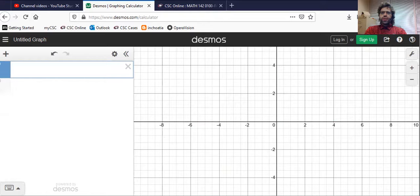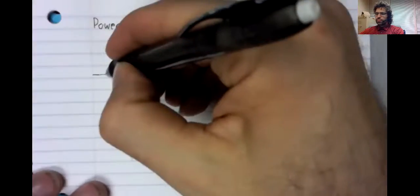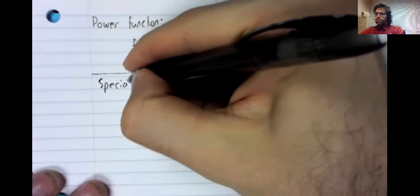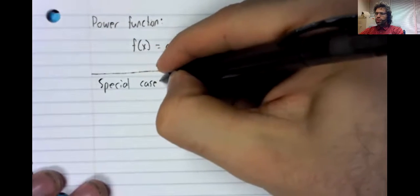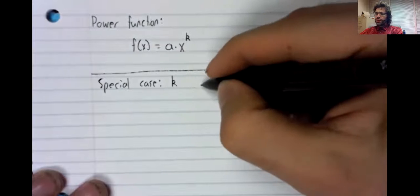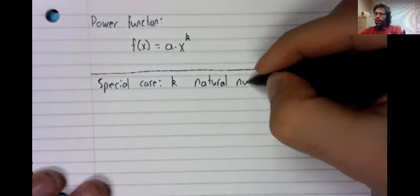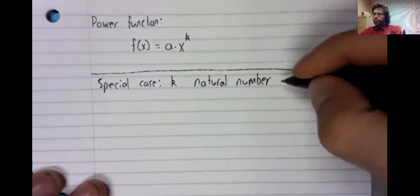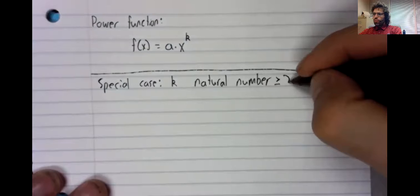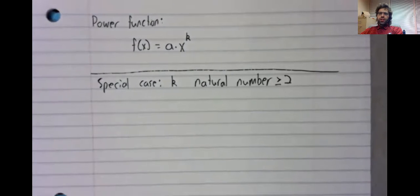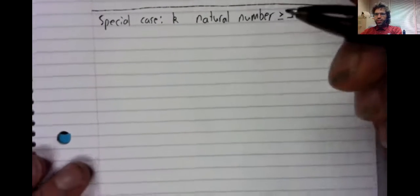However, if we limit ourselves to the case where this power k is a natural number greater than or equal to 2, then things become significantly easier.